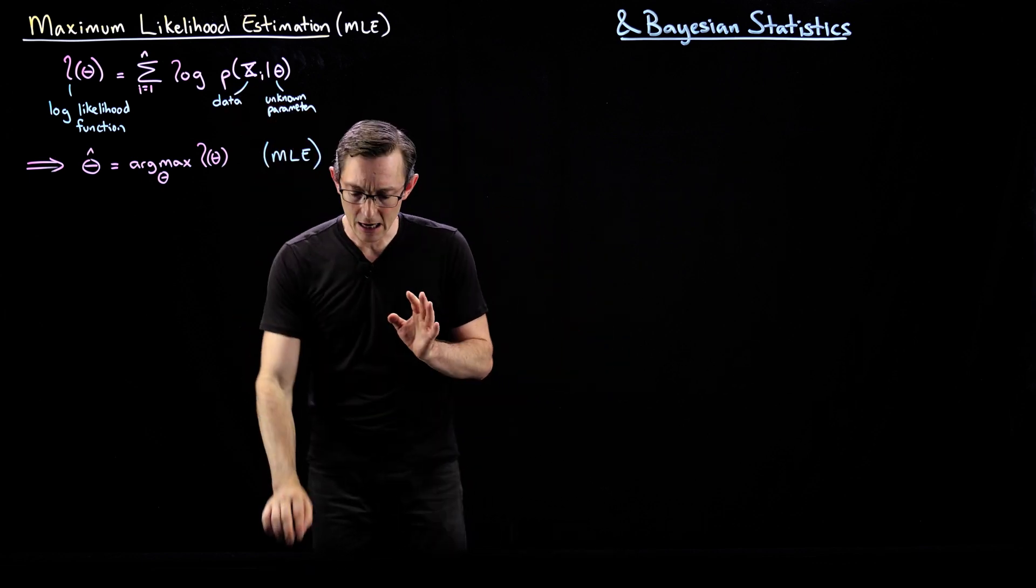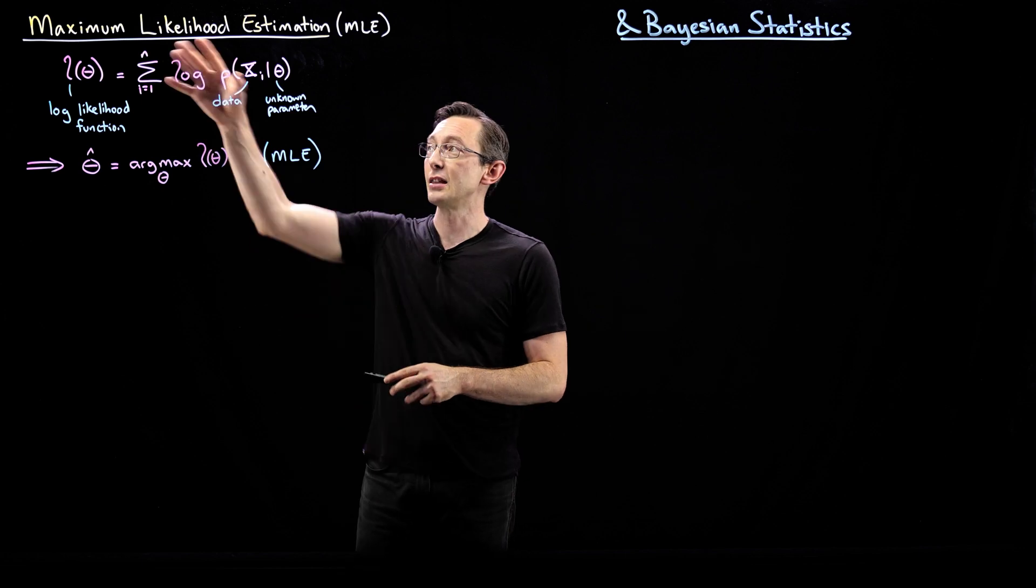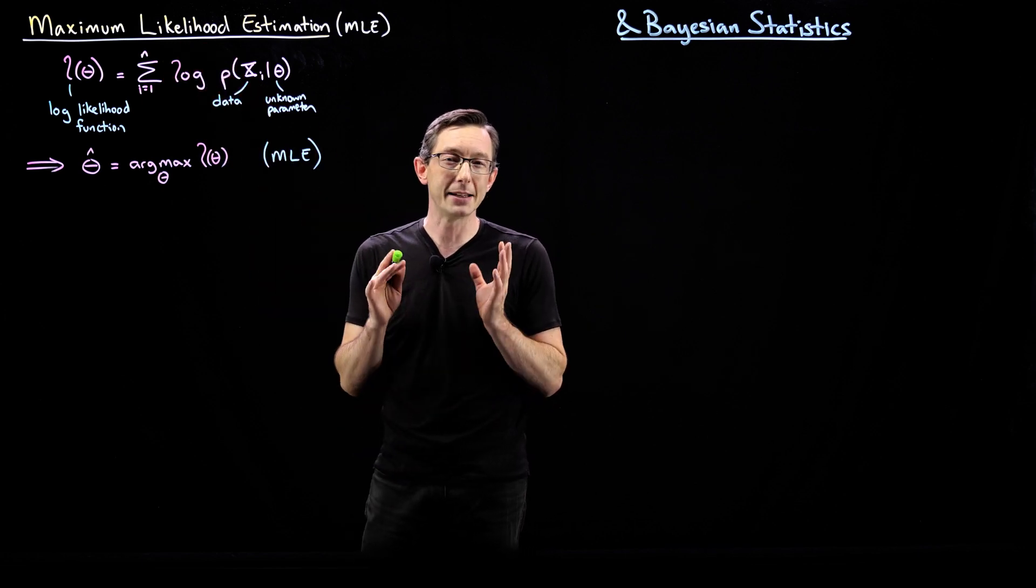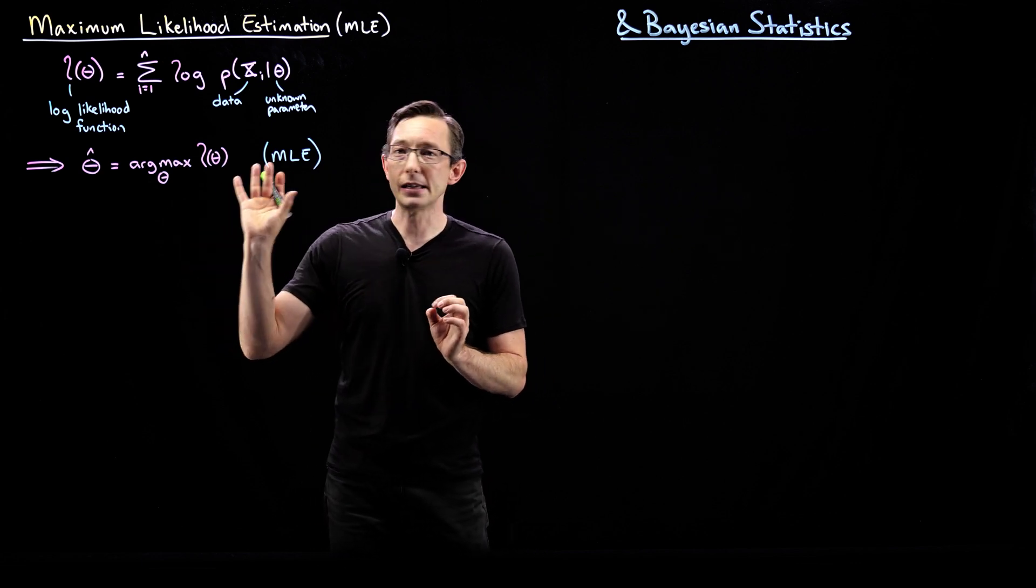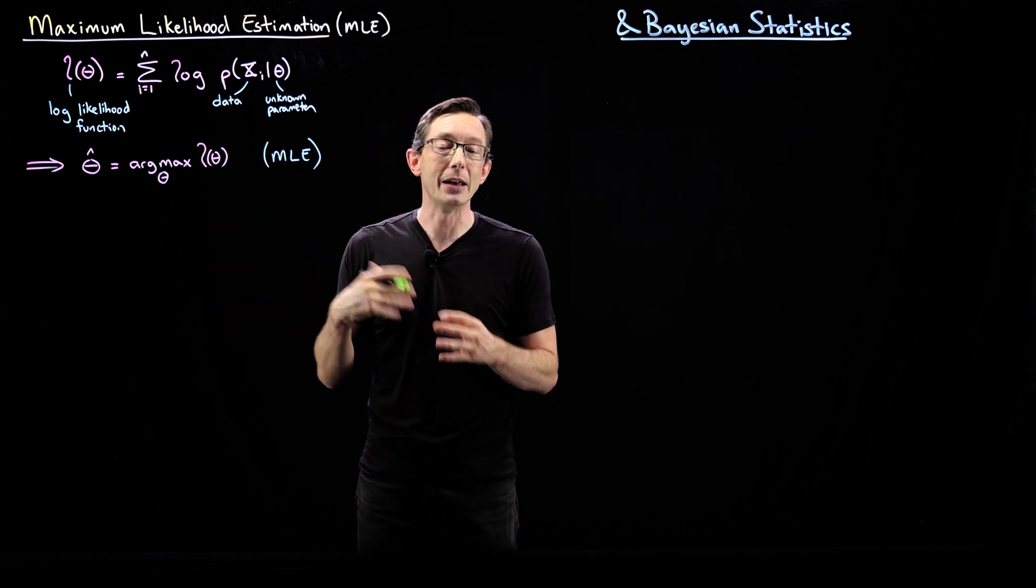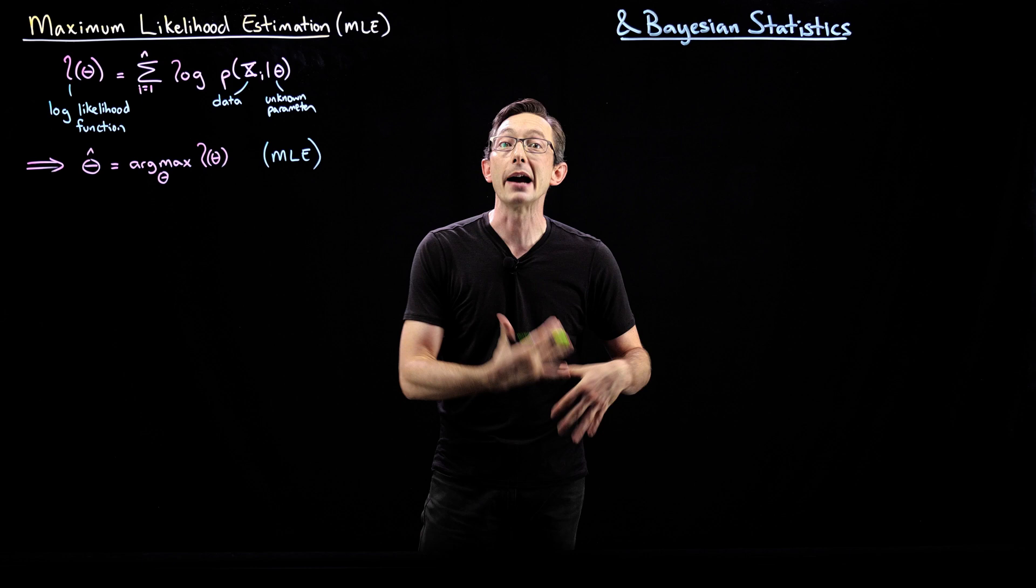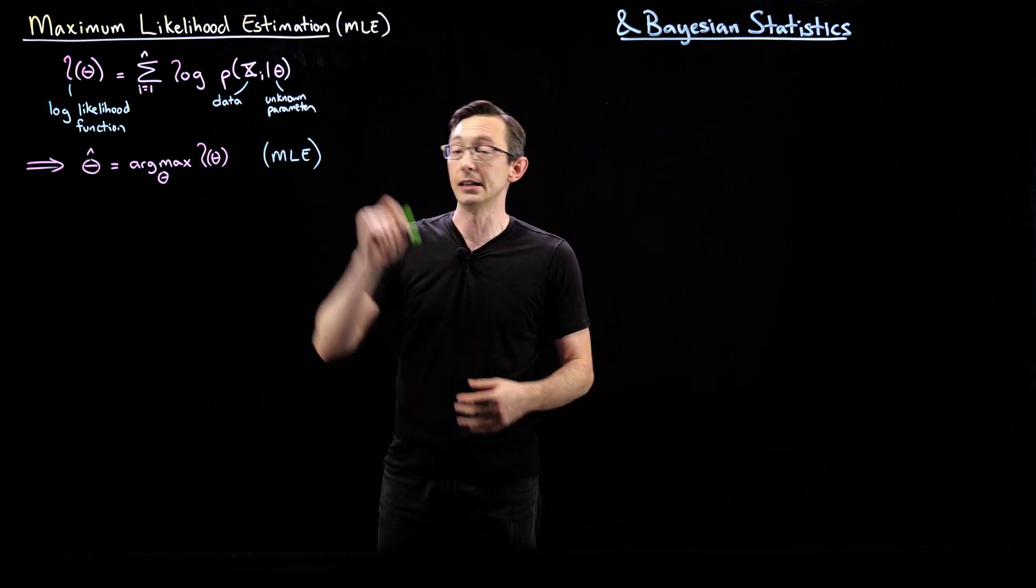Now, there is a big downside to the maximum likelihood estimation. That downside is essentially it is fragile to bad data. And it doesn't allow me to include any prior knowledge or beliefs into these parameters.